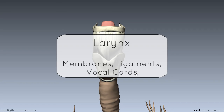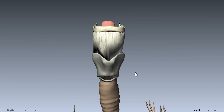In this tutorial, we're going to talk about the membranes and ligaments of the larynx and then we're going to look at how the mucosa folds over the ligaments to form the vocal cords. We're looking here anteriorly at the larynx and you can see the trachea below and the hyoid bone at the top.